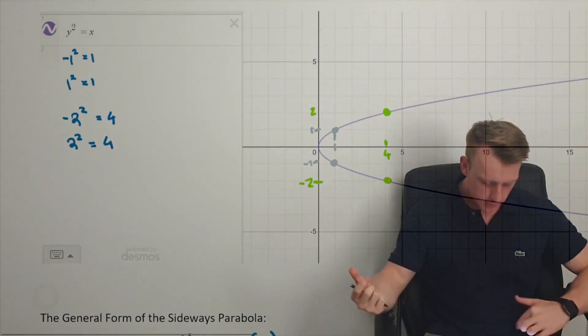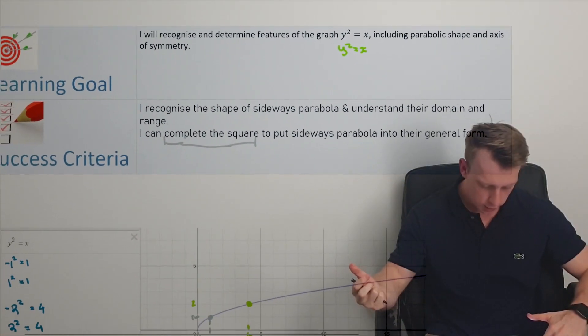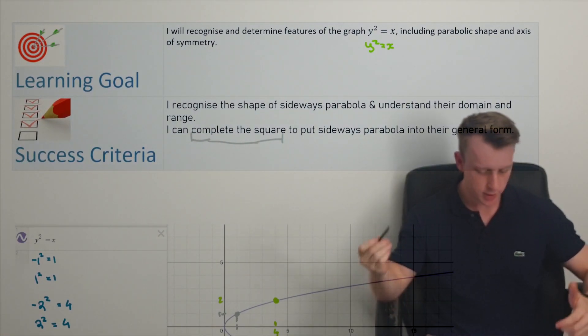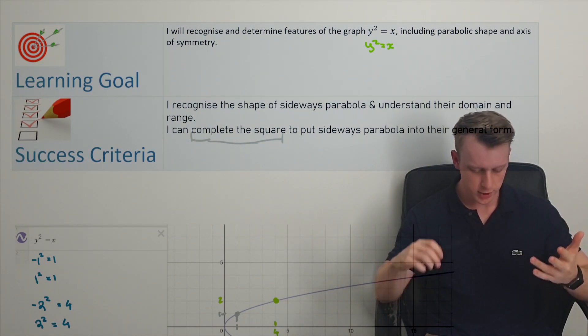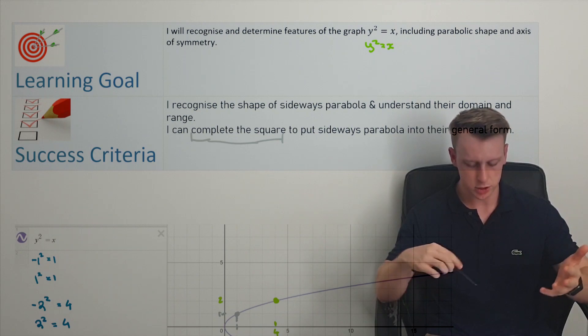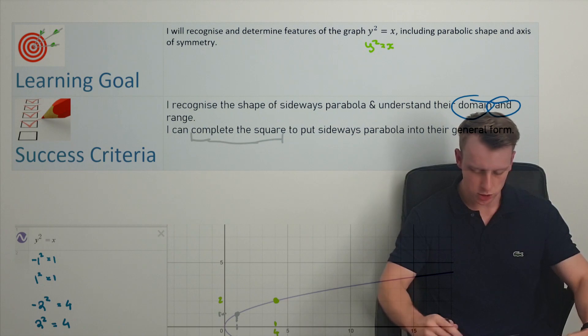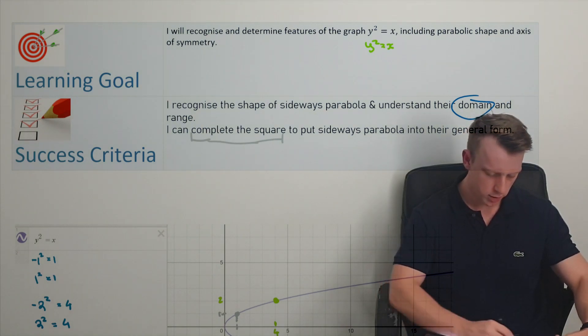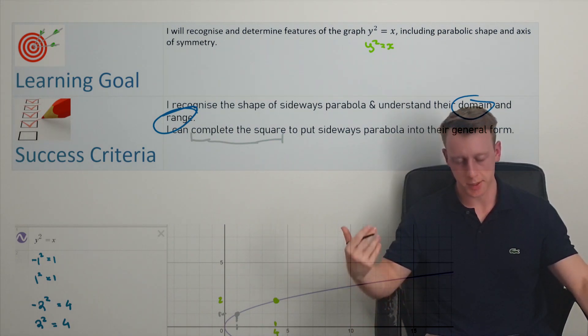So again, referring back, learning goal, success criteria. Are we able to recognize it? Can we determine features? Can we complete the square, put it in this general form? Can we look at domain and range? A domain and range, and highlight those for the sideways parabola.